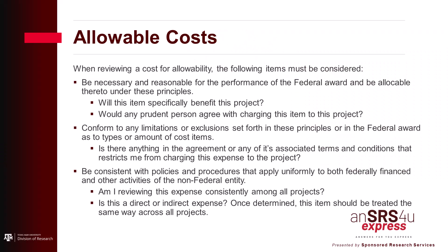The first thing we want to talk about today is allowable costs, or identifying how you would know whether an expense could be charged to the project. When looking at that, there are three main things to consider: Is this expense necessary and reasonable? Does it conform to any limitations or exclusions set forth in the award? And are we treating it consistently among all of our projects?